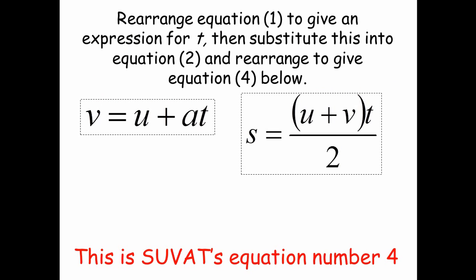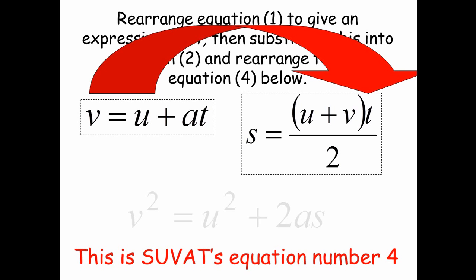And finally, rearrange equation one to give an expression for T, and substitute this into equation two, and rearrange to give equation four below. And that gives us v squared equals u squared plus two AS. And this is SUVAT equation number four.